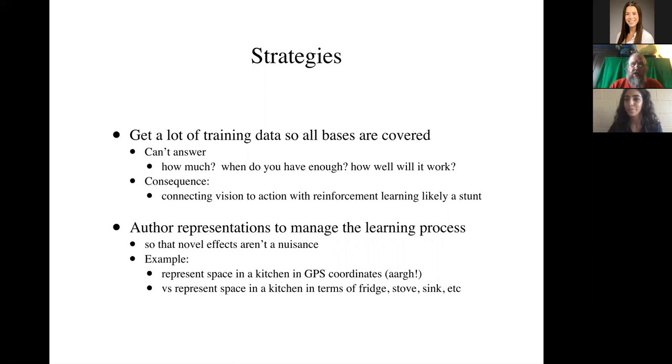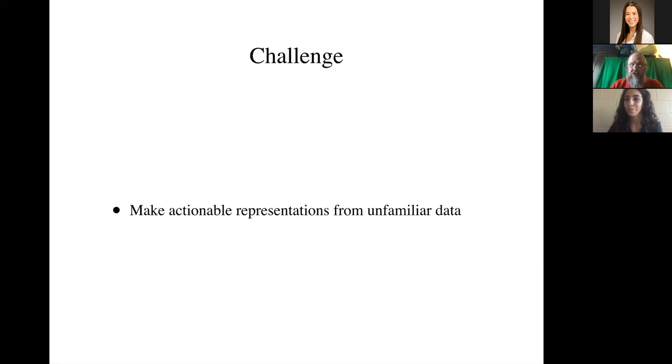There are some strategies here, but they're not very satisfactory. One thing you could do is just get a lot of training data so all bases are covered. Collect a couple of hundred movies of people unloading donkey carts and you'll be fine. It's not a very sensible answer. We don't really know how much data you need, when you have enough, and how well it will work when you collect it a lot. And what that means to me at least is just simply connecting vision to action with reinforcement learning is likely a stunt. One needs to think very hard about representation. Another strategy is to author representations to manage the learning process so that novel effects aren't a nuisance. So one simple example here, if you represent space in a kitchen in GPS coordinates, you've got real problems because every kitchen is different because they're in different places on the planet. And that means your training data is probably not very helpful. If you represent space in the kitchen in terms of the space that's close to the fridge, the space that's close to the stove, the space that's close to the sink, you've got lots and lots of examples and you might be in very good shape. So understanding how we should represent things may help us with the rules of machine learning. The challenge is how do we make actionable representations from unfamiliar data. That remains a hard, hard challenge.